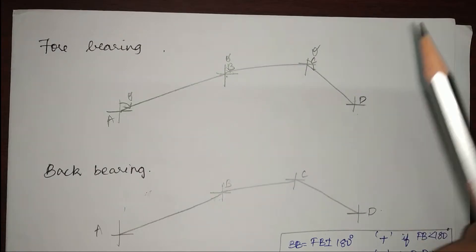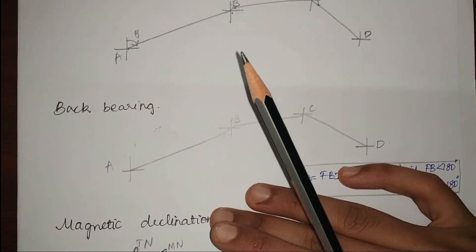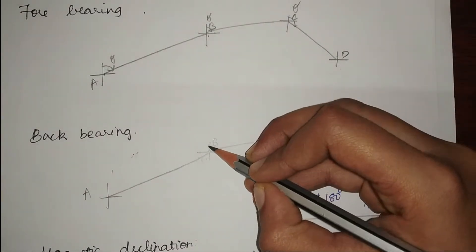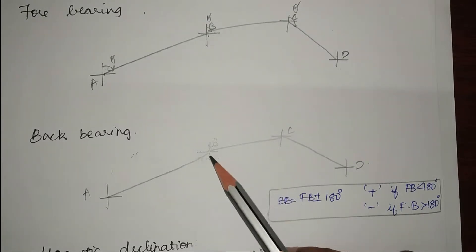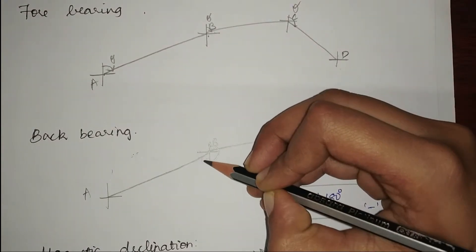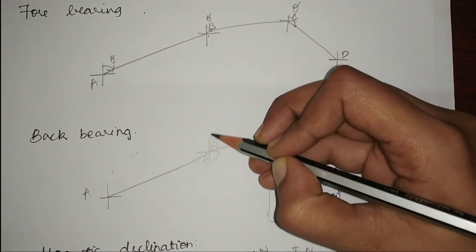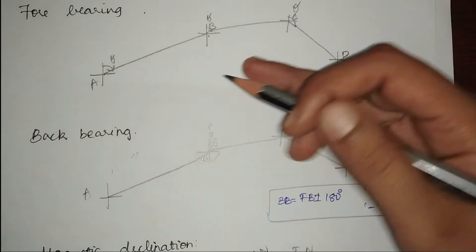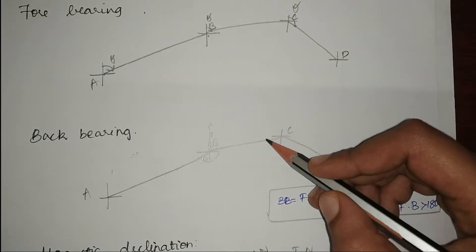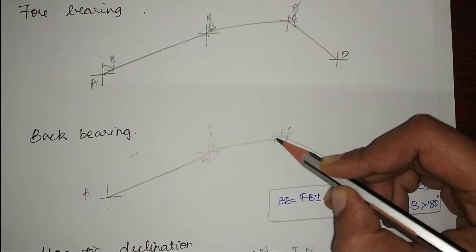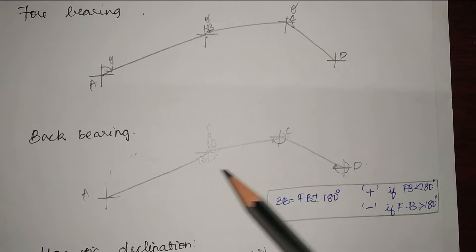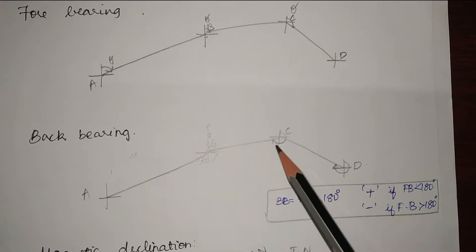Coming to back bearing: the back bearing of line AB is measured from the north, but since it is back bearing, I'm going to start from the end point B. From zero degrees or the north, till the circle touches the line. The same applies for the other lines. From this pattern we can see that the back bearing is measured opposite to the progression of surveying.